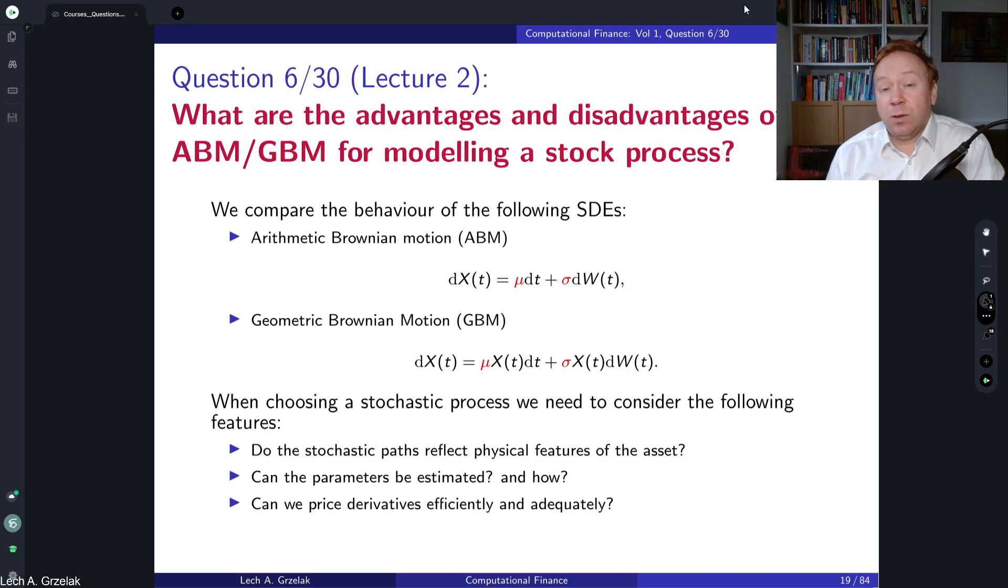So here advantages or disadvantages? Advantage is very few because we can only fit the physical representation whether market allows for positive or negative assets, but not much more. We have only one parameter, so if the market allows us to calibrate only one parameter that should be enough, otherwise it's not.